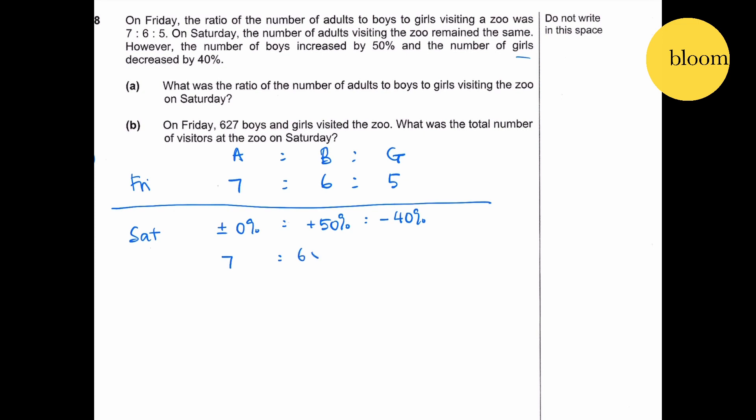Therefore, adults remain 7, boys will be 6 times 1.5, girls will be 5 times 0.6, which gives you 7, 9, 3. So the ratio is 7:9:3.